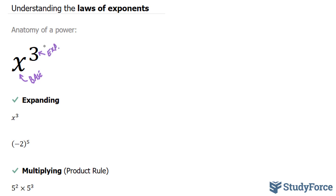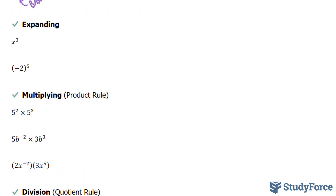Let's start with expanding. Here we are asked to expand x to the power of 3 and bracket negative 2 to the power of 5. So to expand x to the power of 3, that means take your x, and given that 3 is the exponent, that means we multiply the base by itself three times. So we have x times x times x.